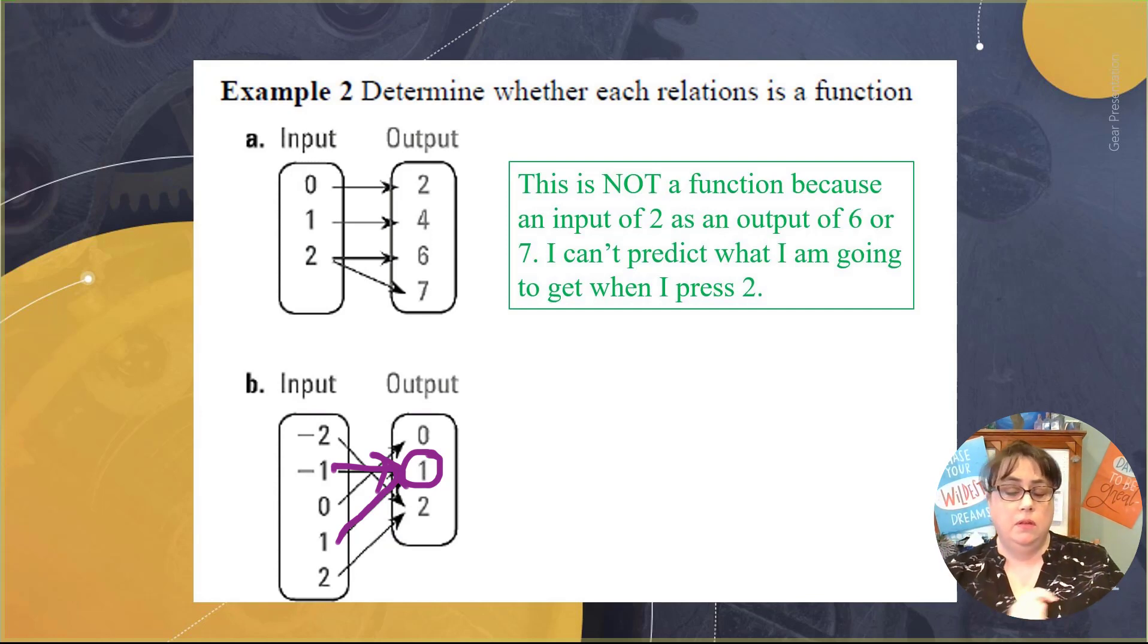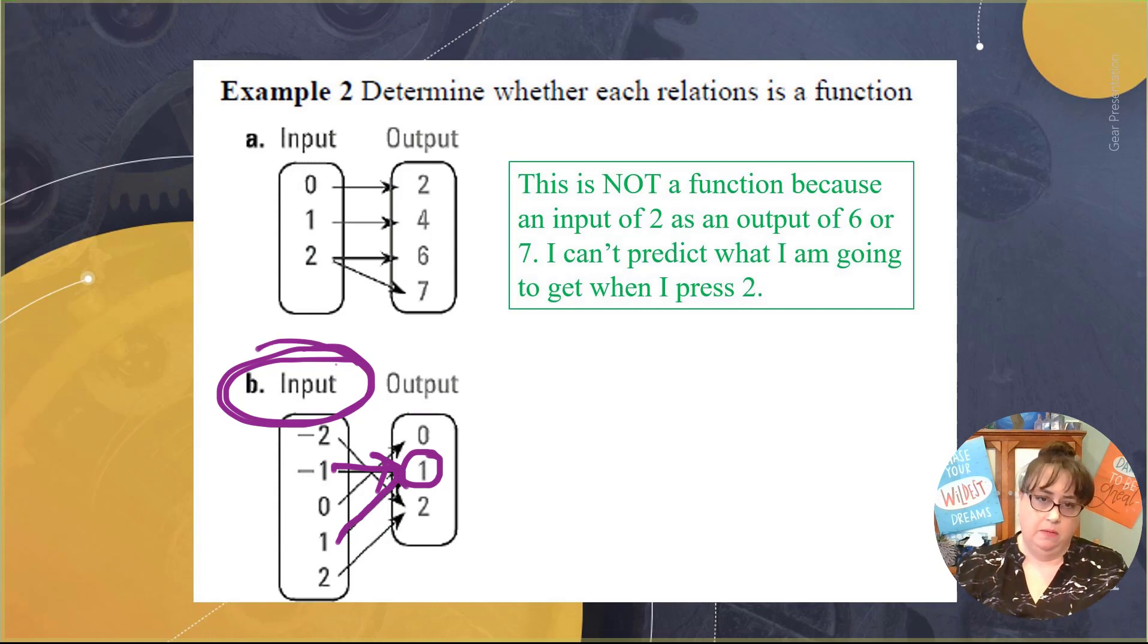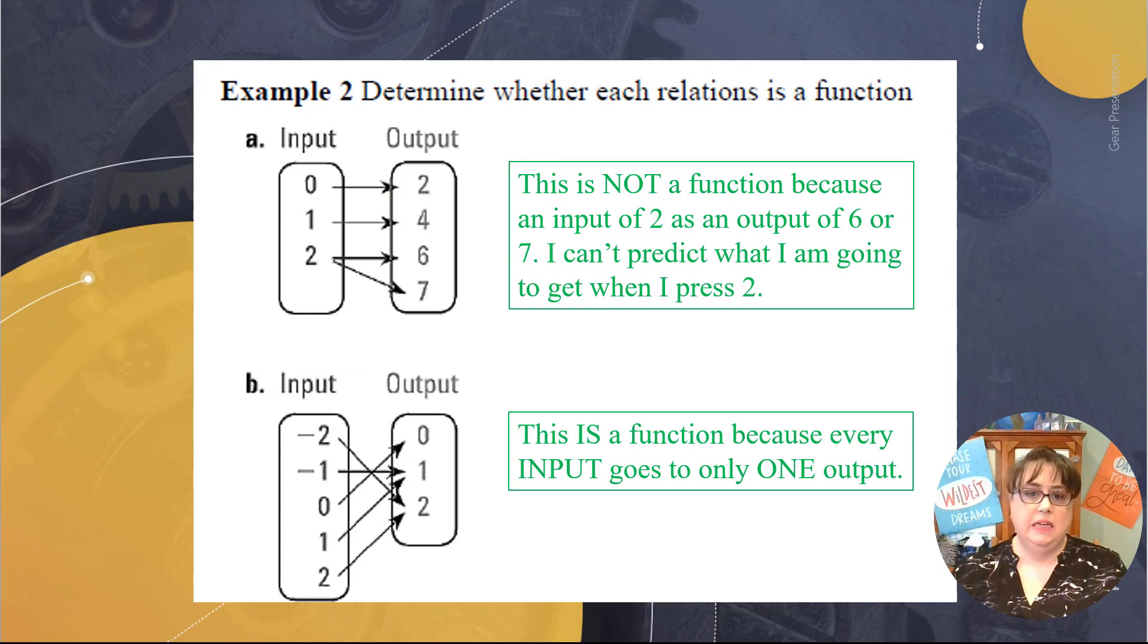You walk up to the Coke machine and you want to get a Dr. Pepper. Dr. Peppers are super popular and there are two buttons for Dr. Pepper. Does it matter to you which one you pick? No. If I pick the top button or the bottom button, I am still going to get Dr. Pepper. There's two ways for you to get it. You can still predict whether or not you get a Dr. Pepper, no matter which button you press. It is still predictable what's going to happen when you are pressing an input button. So this is a function because I know what I'm going to get when I press input buttons.